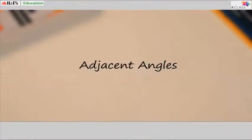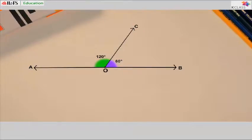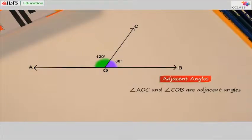Adjacent angles. Look at this figure — angles AOC and COB. They lie next to each other with a common arm OC. Adjacent means next to. When two angles lie on opposite sides of a common arm and have a common vertex, they are known as adjacent angles. Note that adjacent angles need not be equal in measure.